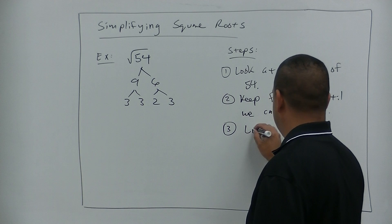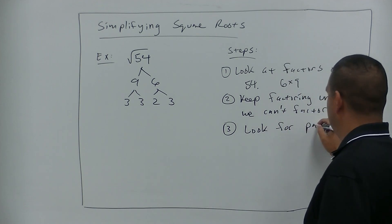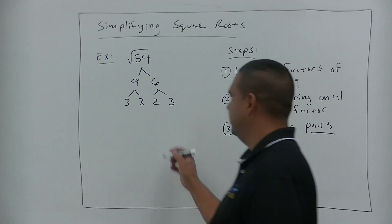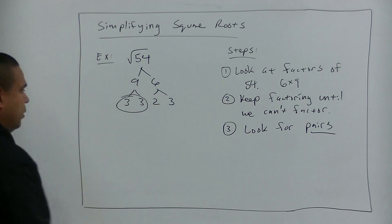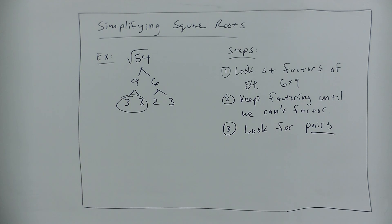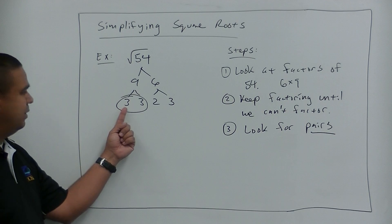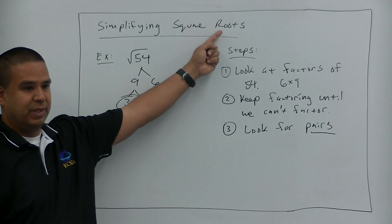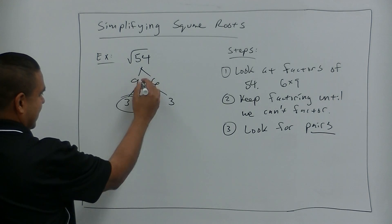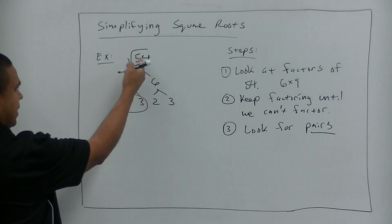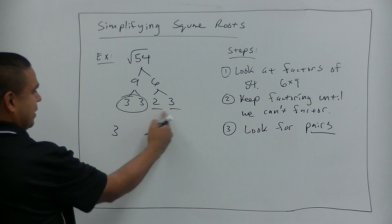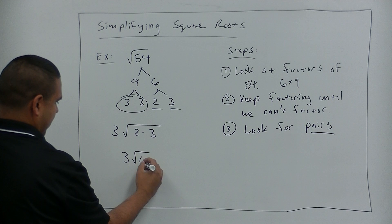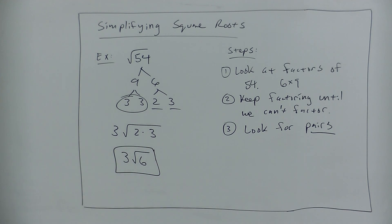Step 3: look for pairs. We look for pairs, so we take a pair of 3s. What is 3 times 3? 9. And what is the square root of 9? 3. So we get to take that 3 outside the square root. Do we have any more pairs left? No. So those stay inside and we multiply them. We end up with 3 square root of 6.